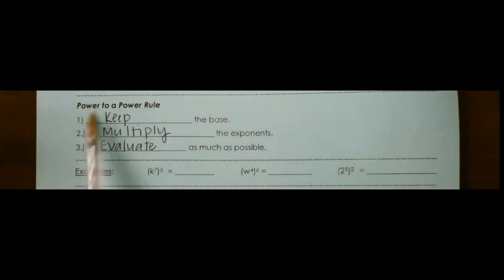The rules for finding a power to a power are very simple. Keep the base, multiply the exponents, and evaluate as much as possible.